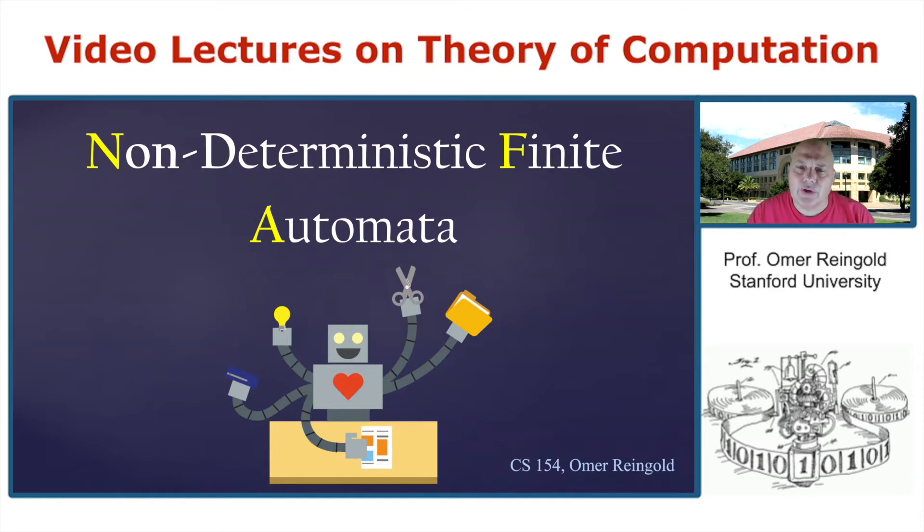To do so, we looked at DFA and we tried to reverse it to be a machine that accepts the reverse of the original language. The problem that we had is that this creature is no longer a DFA. In fact, it can do various things at any given point, and therefore we call it non-deterministic finite automata. It can do many things at the same time.